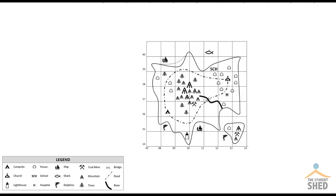On Ordnance Survey Maps, or OS maps, the grid lines come with blue or black vertical and horizontal lines, and each grid forms a square. Four-figure grid references are used to find a specific location of something, or at least the square in which it's located.